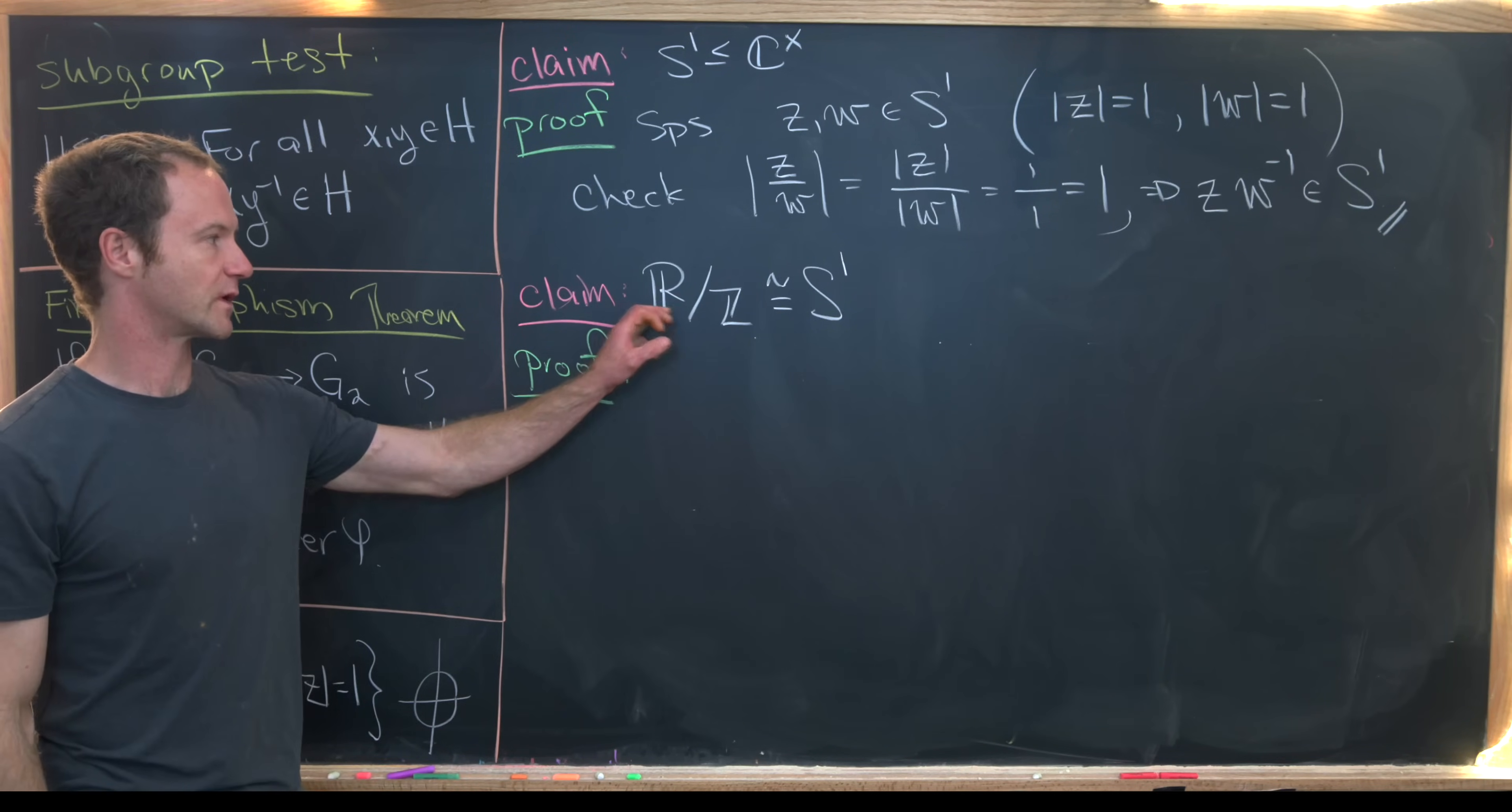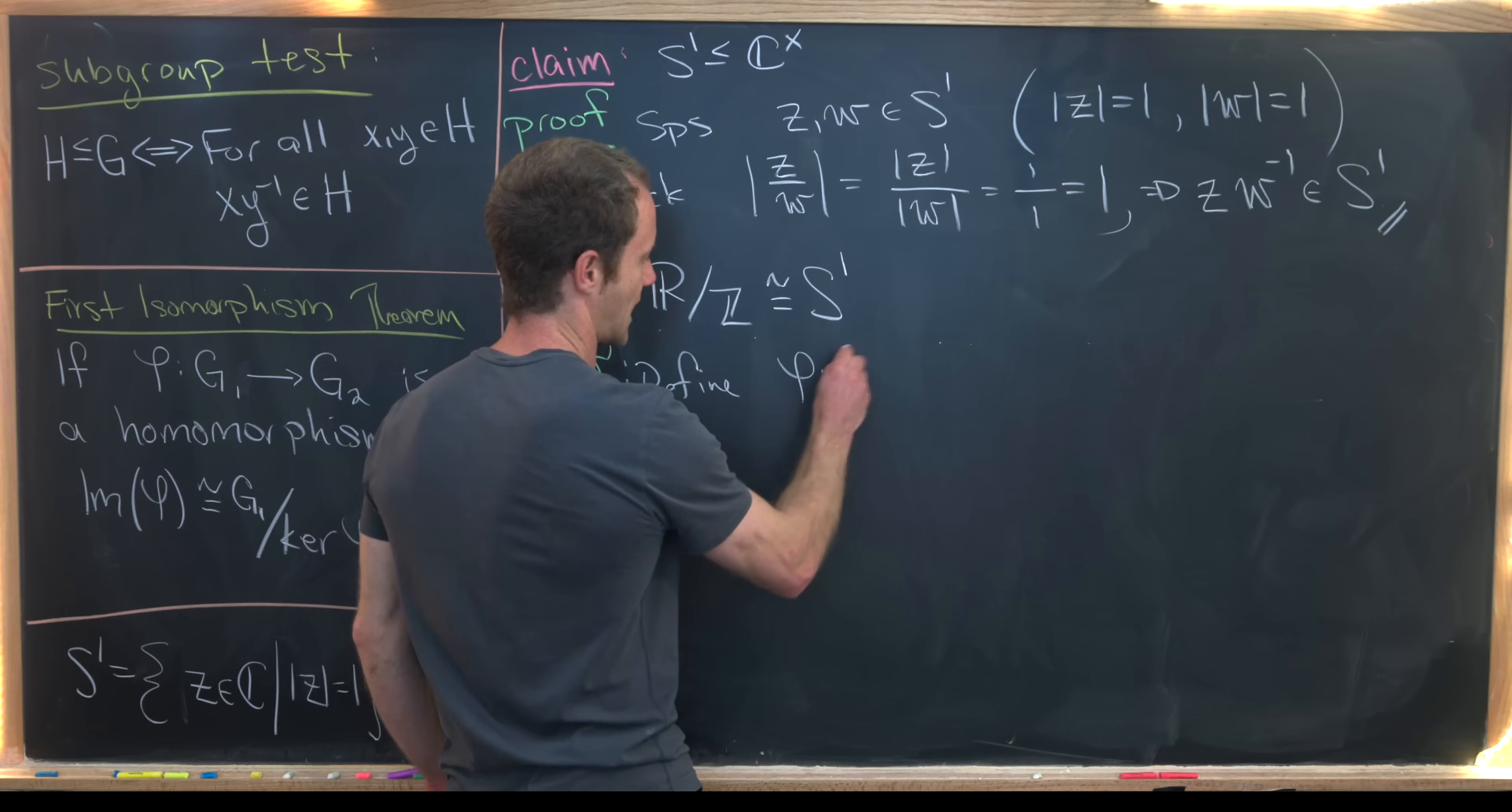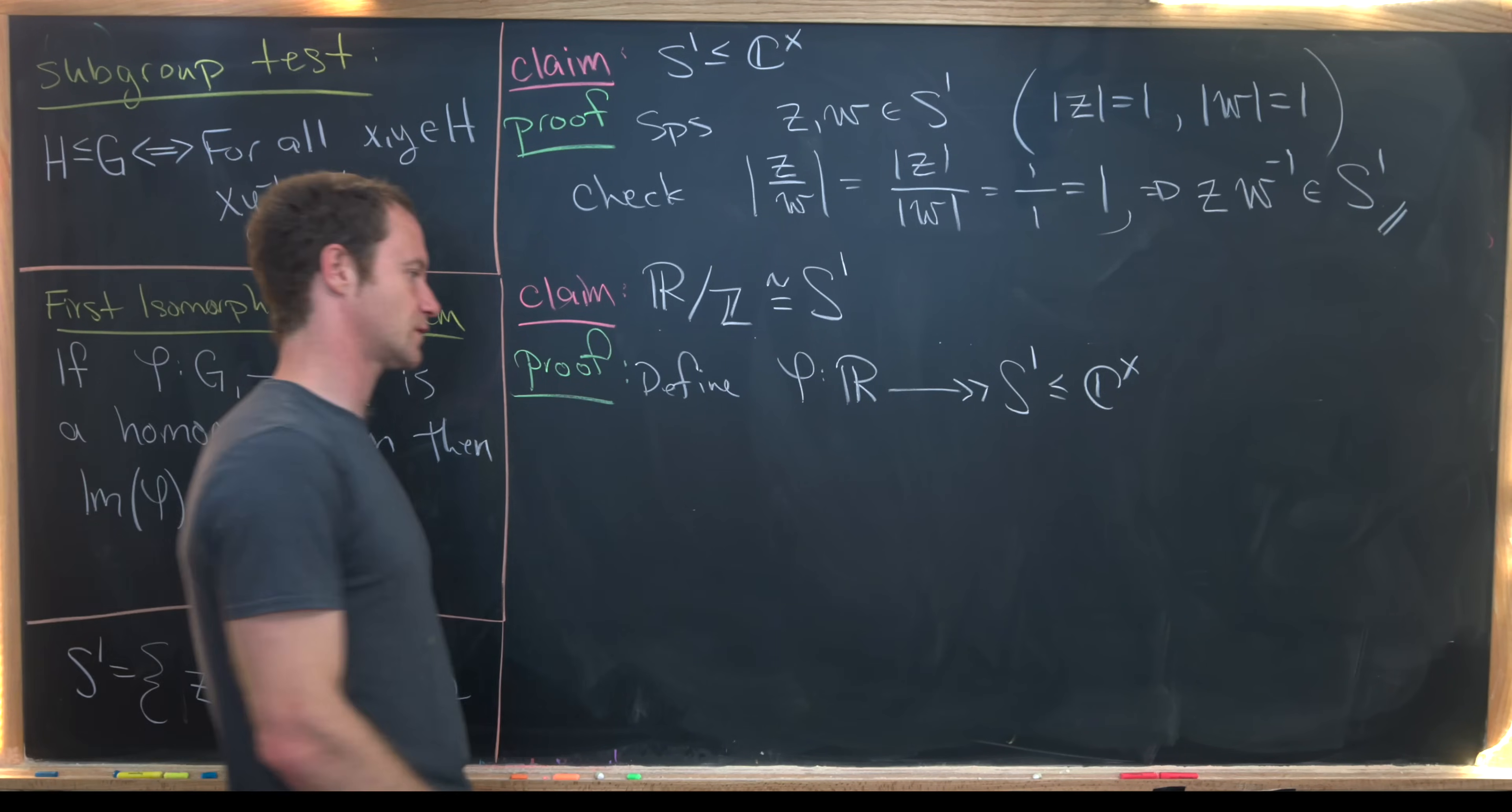Next, we'll show that the real numbers mod the integers forms a group isomorphic to the circle. We have to think about this carefully. I want to define a homomorphism. That homomorphism, I'll call phi, goes from the real numbers onto S1 as it lives inside of this multiplicative group of non-zero complex numbers. So how can we define a map from R to S1?